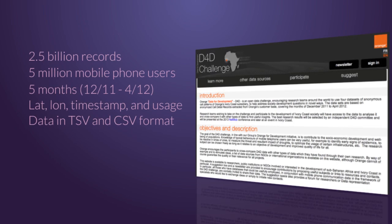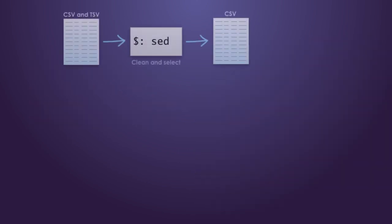To ensure our software worked with real data, we acquired information about cellular communications towers in the Ivory Coast. These data come from the Data for Development Challenge and represent the activity of over 5 million mobile phone users. The comma and tab-separated values files are then processed to remove special characters and select subsets of the data suitable for use on the web.